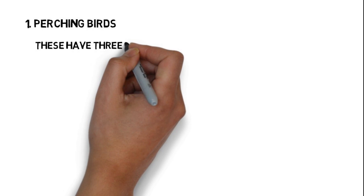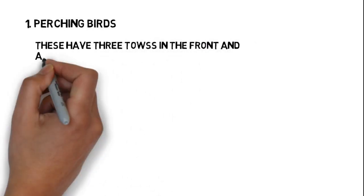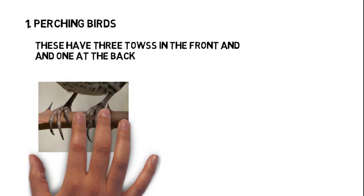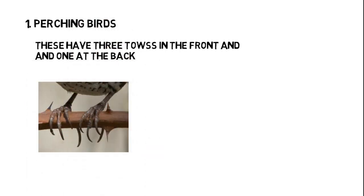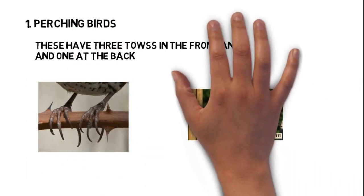Number one, perching birds. These have three toes in front and one at the back, which help them hold branches tightly. For example, sparrow.